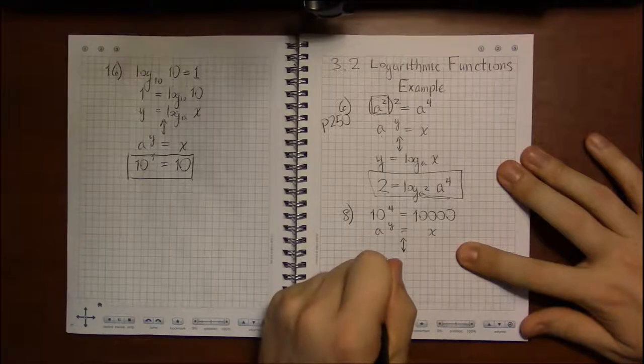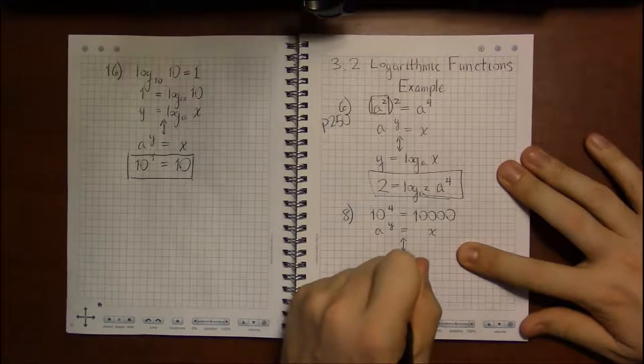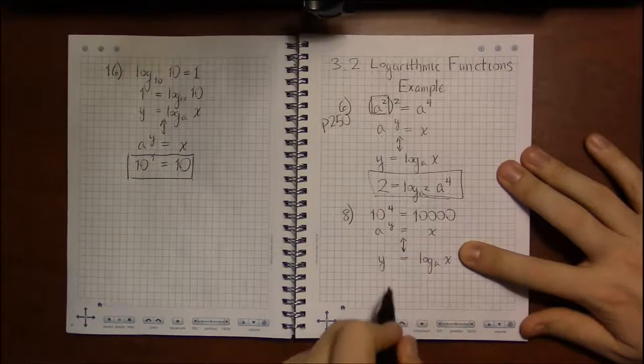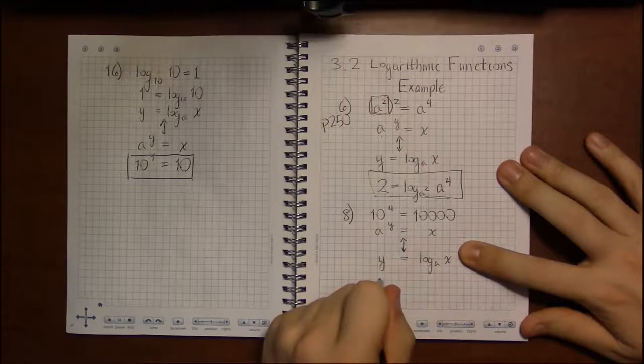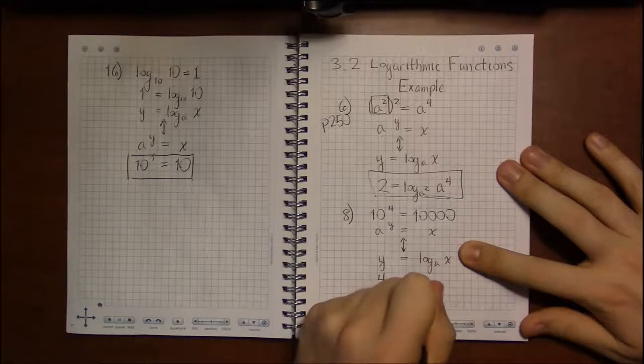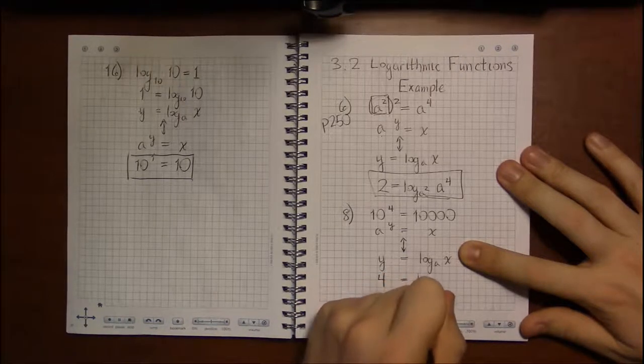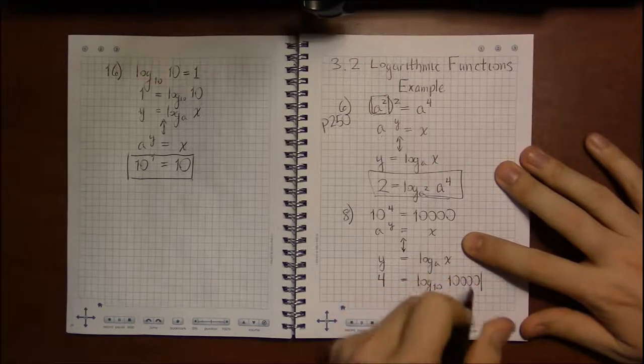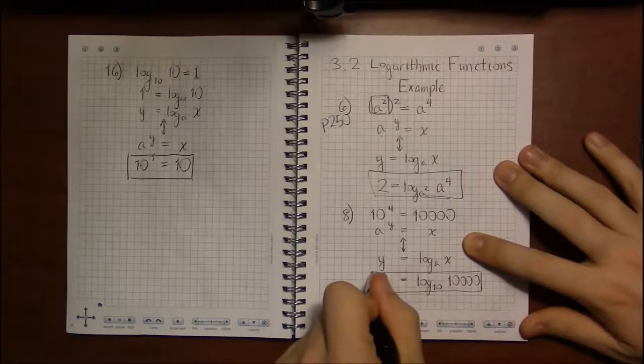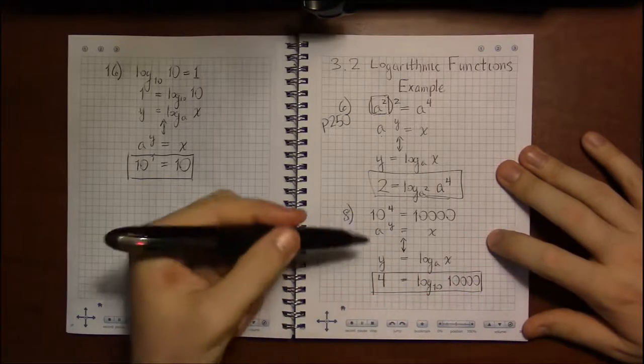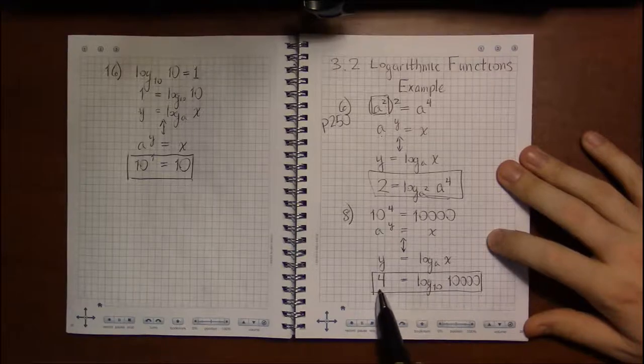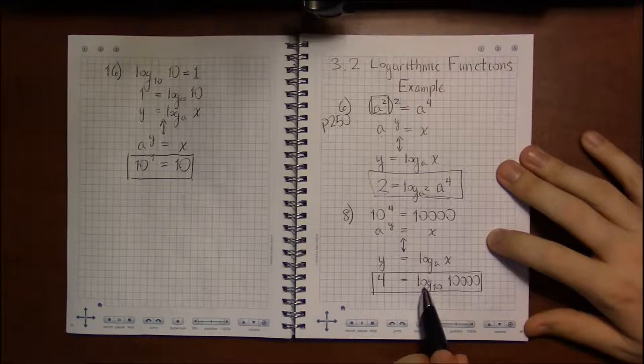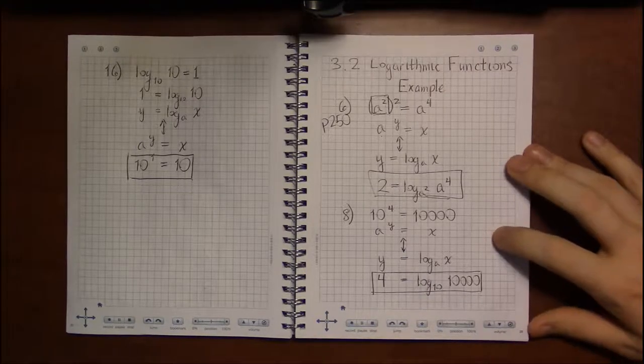When we convert this, it's going to be y equals log base a of x. So y in this problem is 4, a is 10, and x is 10,000. Saying 10 to the fourth is 10,000 is the same thing as saying that 4 is equal to log base 10 of 10,000.